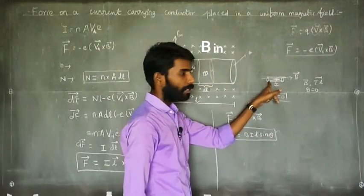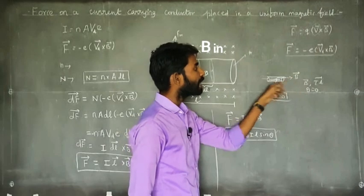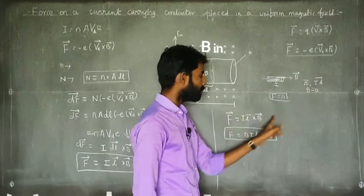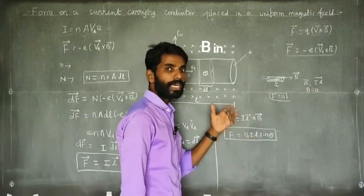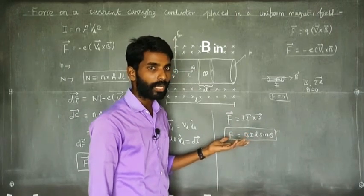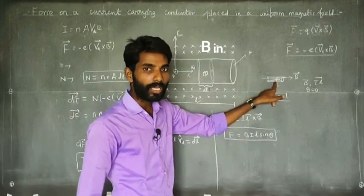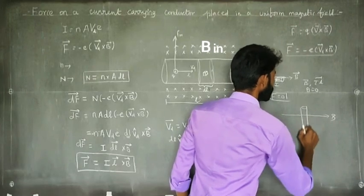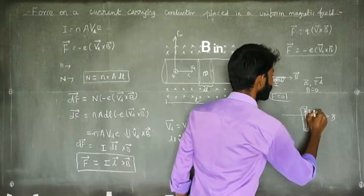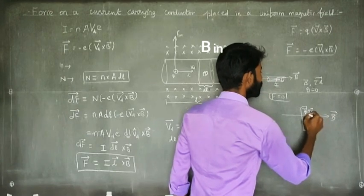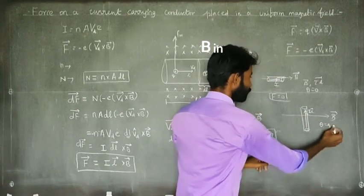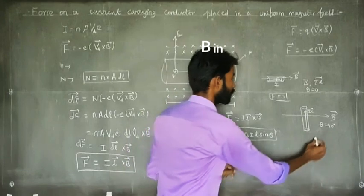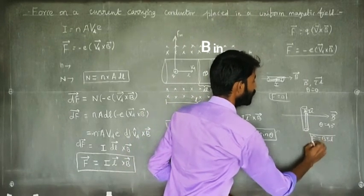If theta equals zero and we substitute into the equation, F equals BIL sin 0 equals zero. That means: when a current-carrying conductor is placed in a magnetic field that is parallel to the conductor — current in one direction, magnetic field in the same direction — theta equals zero, so force is zero. Now suppose B vector and IL vector are perpendicular — theta equals 90 degrees. Substituting: F equals BIL sin 90, and sin 90 equals 1. Therefore F equals BIL — the maximum force. This is a very important result: when the current-carrying conductor is perpendicular to the magnetic field, maximum force is experienced.